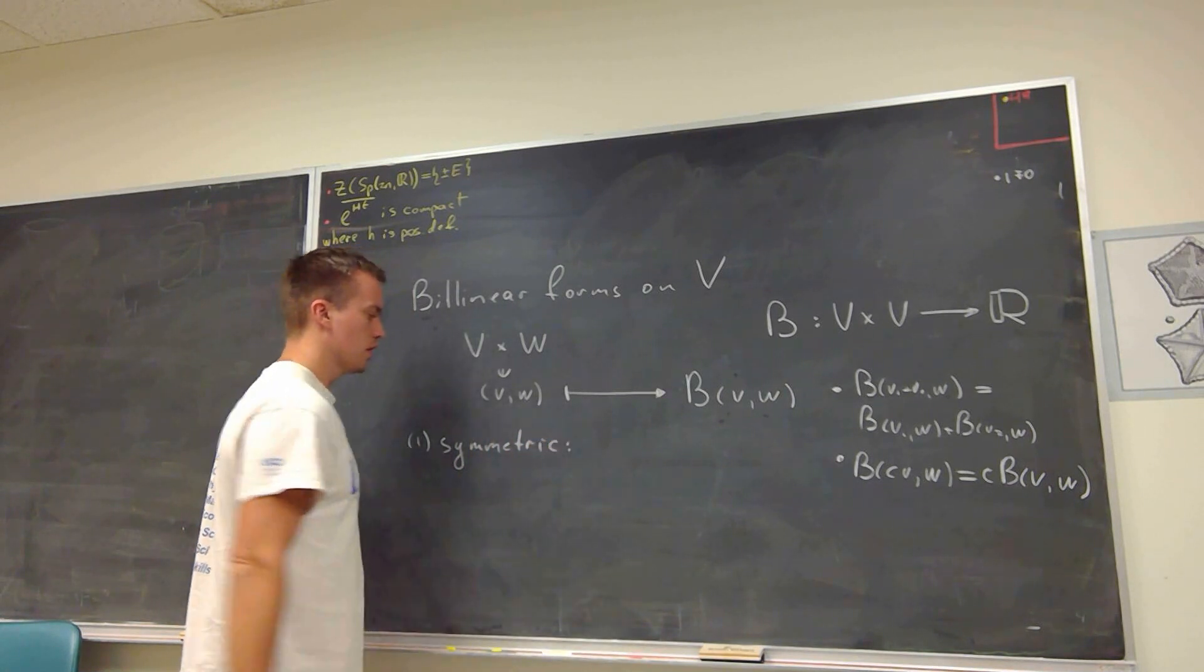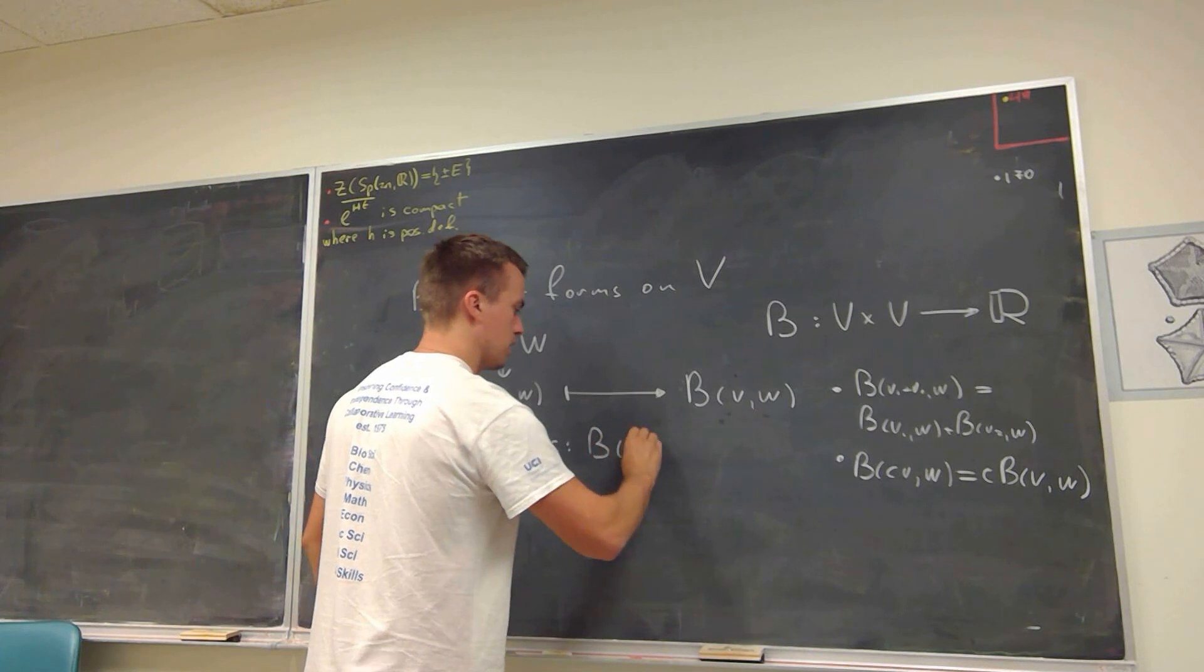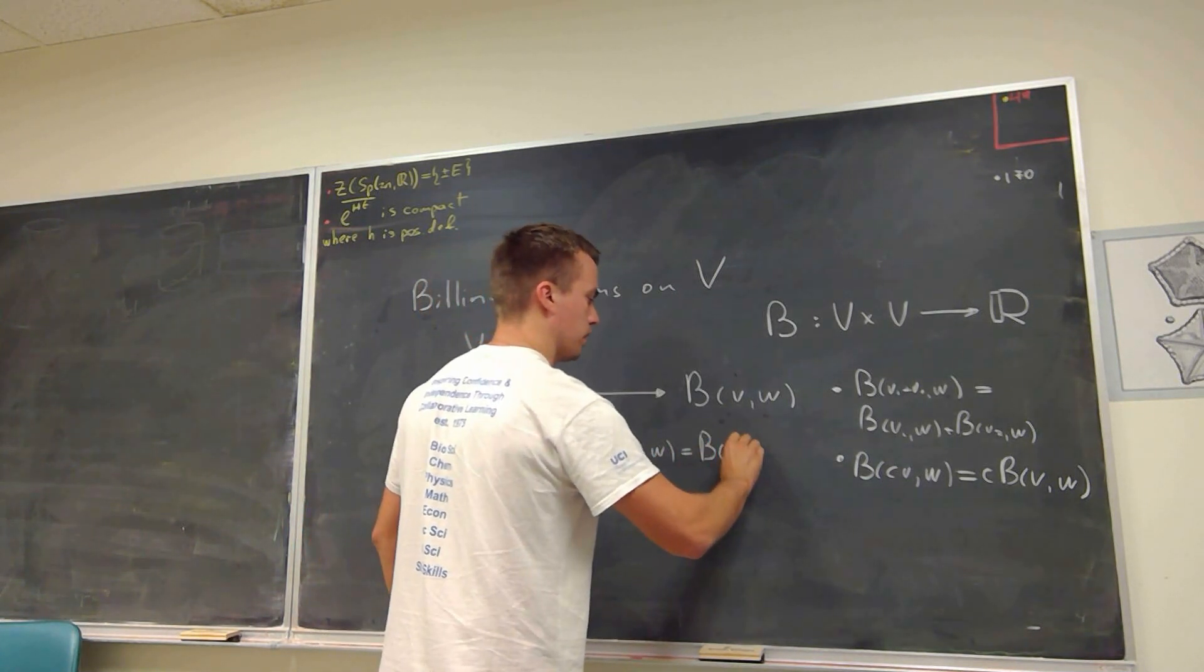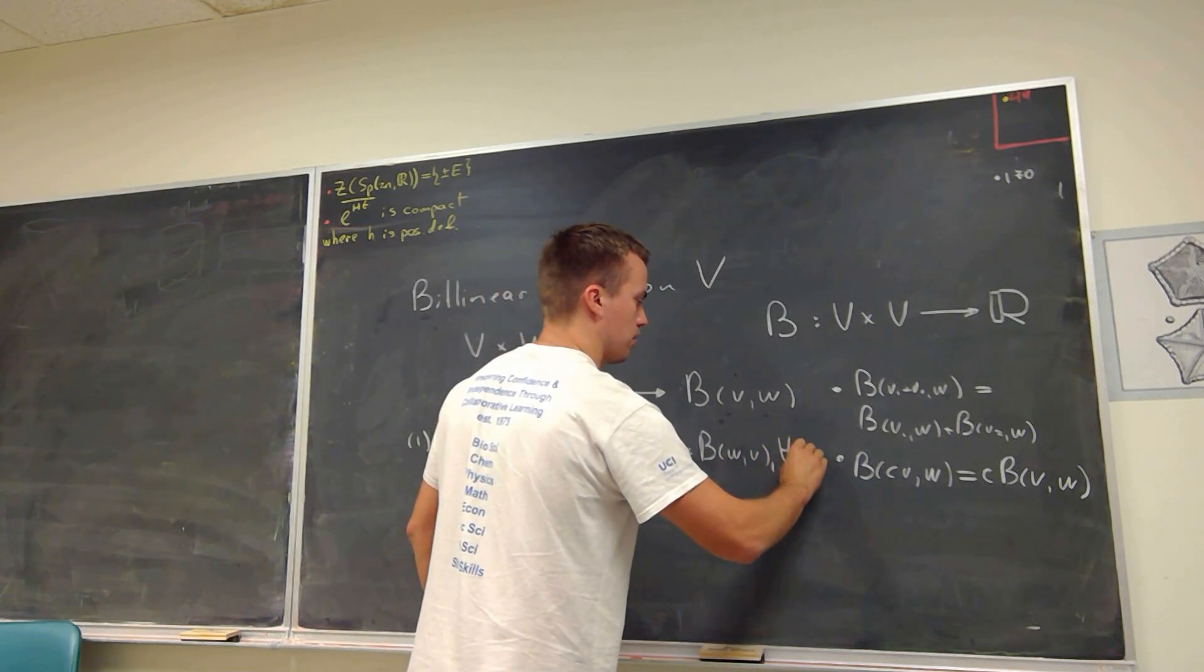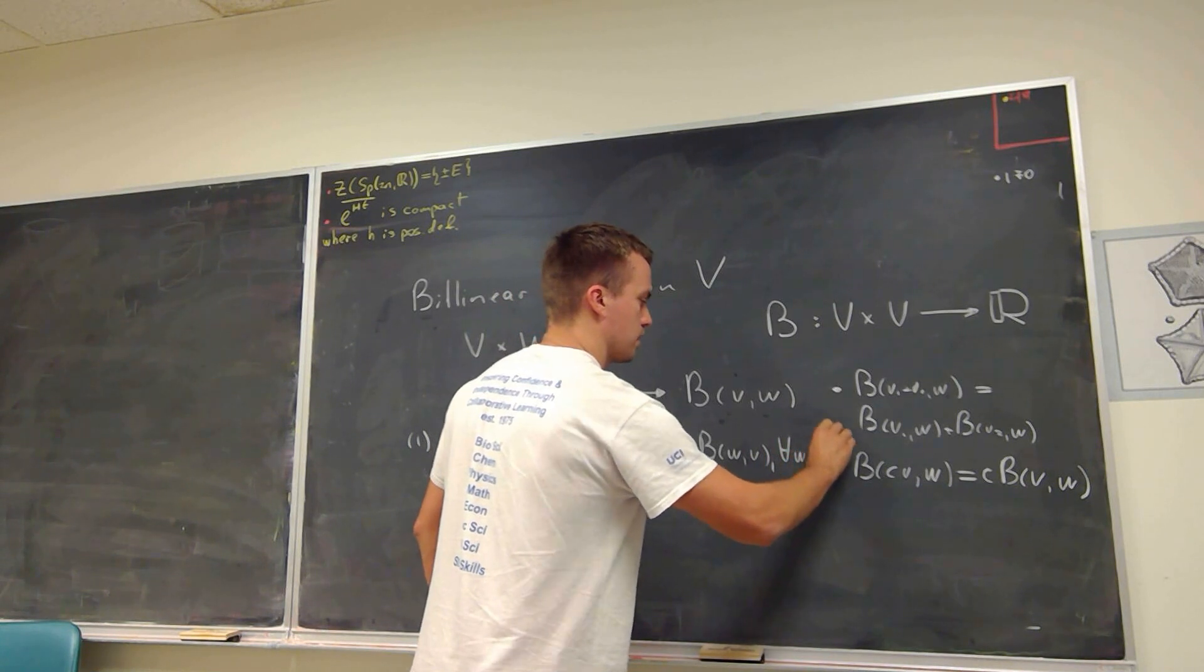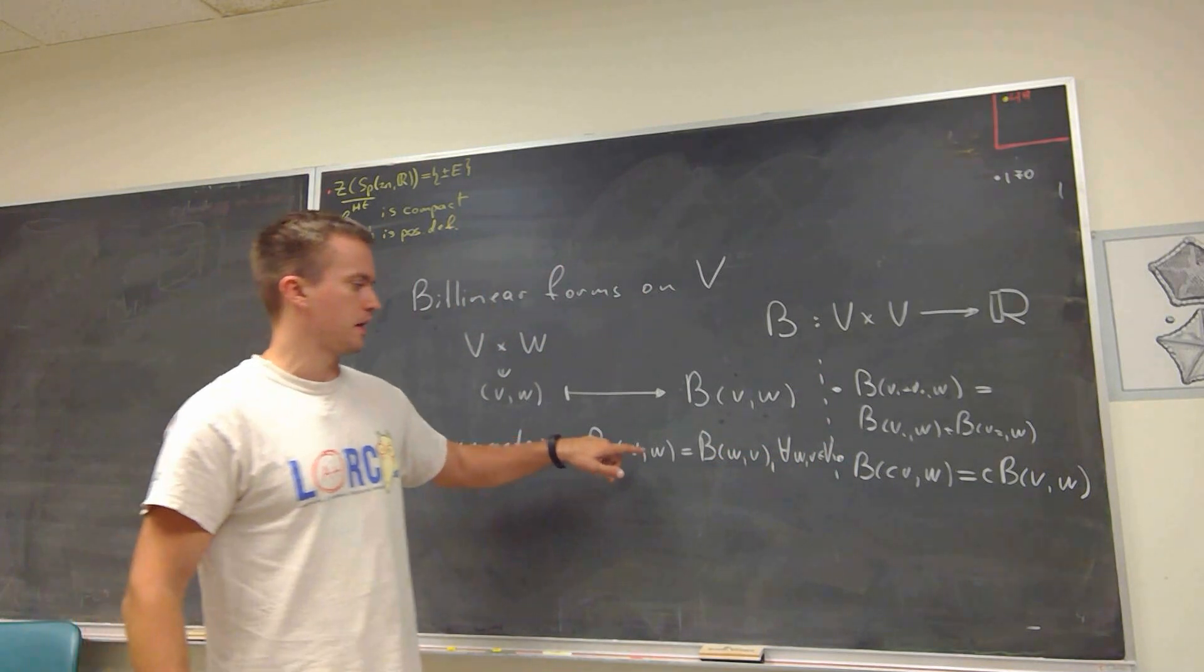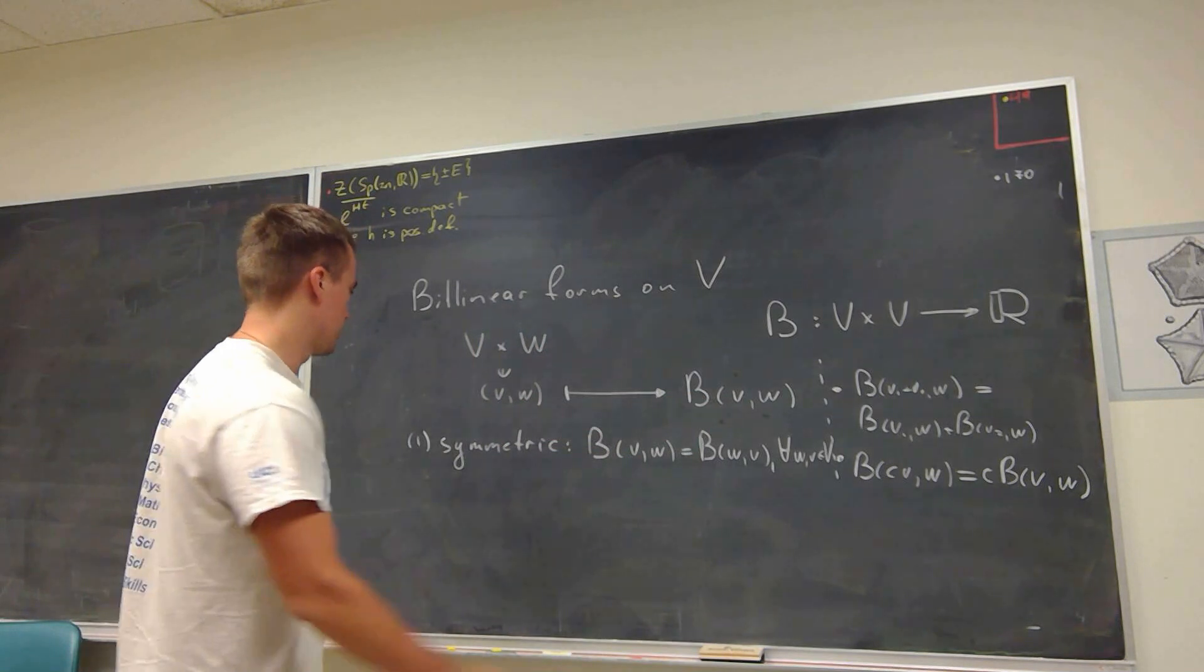And symmetric bilinear form is going to be the form such that we're going to have B(V,W) is equal to B(W,V), and this is for any vectors V and W in my vector space. So in other words, that means I can take my vectors, my inputs, and just interchange them, and the output from my form is not going to change.